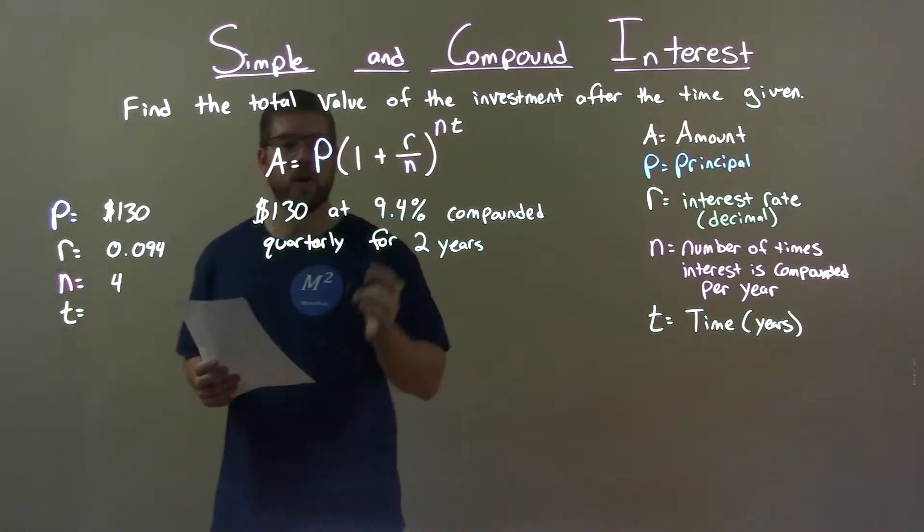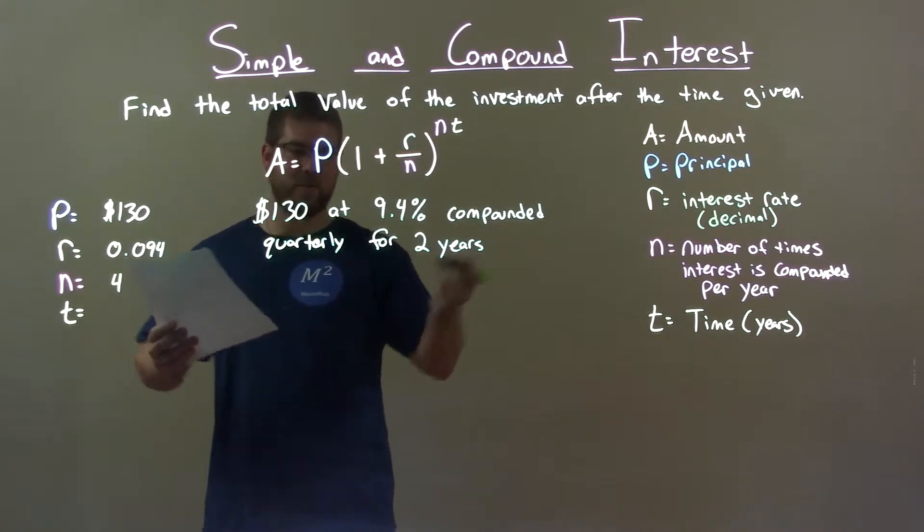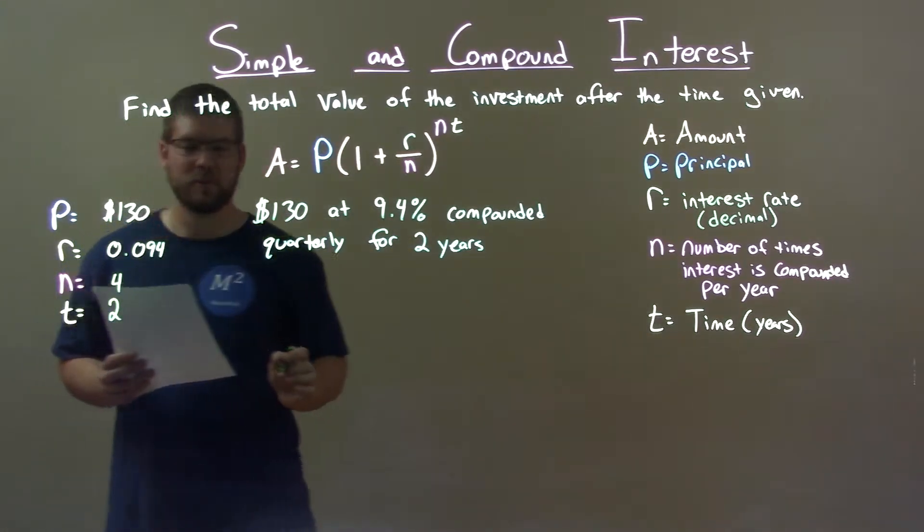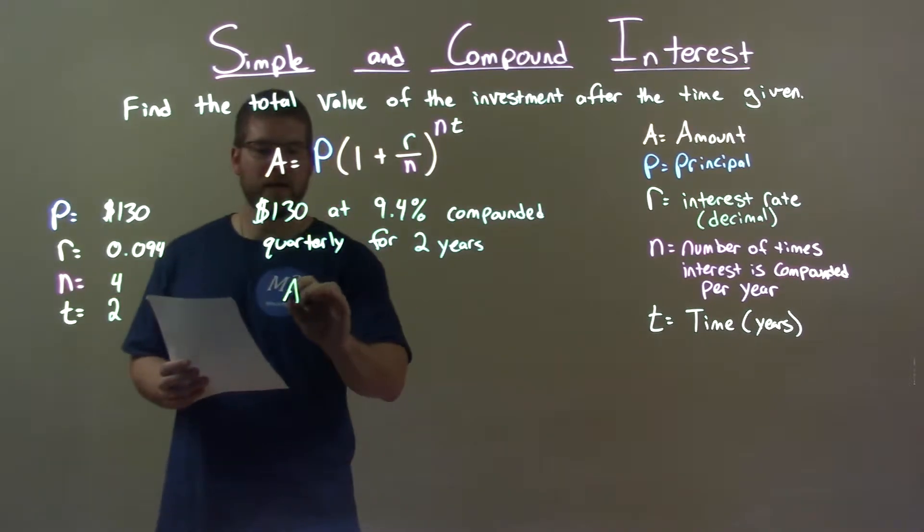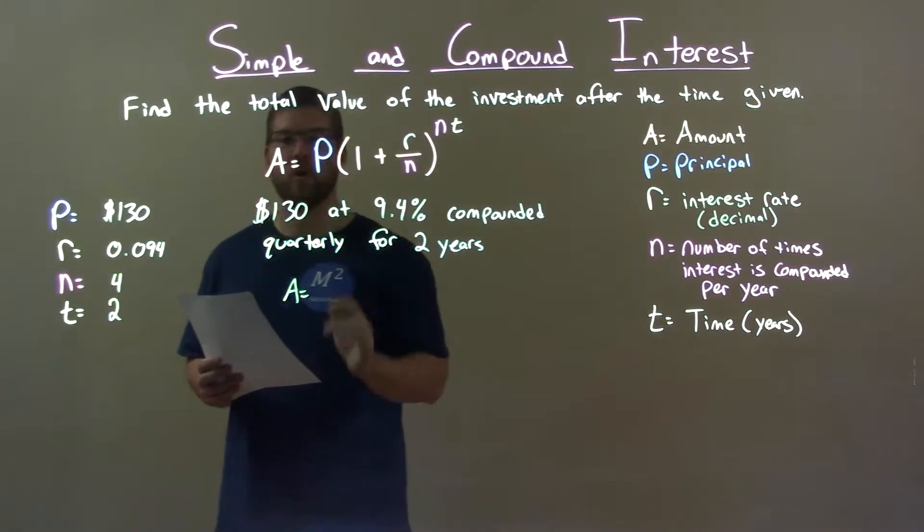Key word there. Alright, number of years or time, number of years is 2. With that information, we plug it into our compound interest formula right here above.